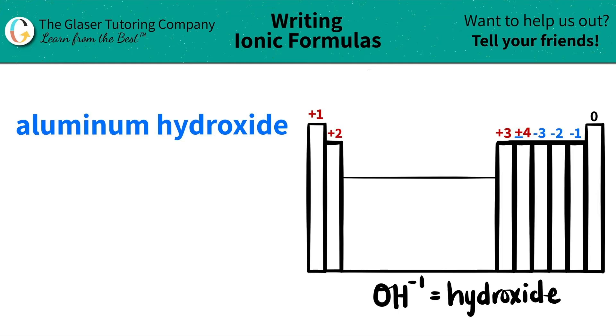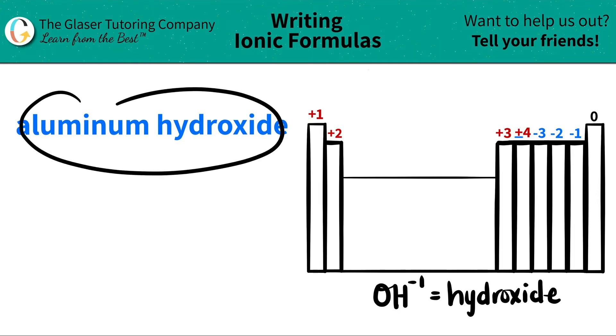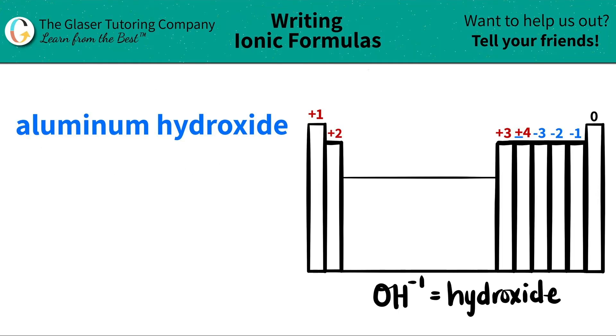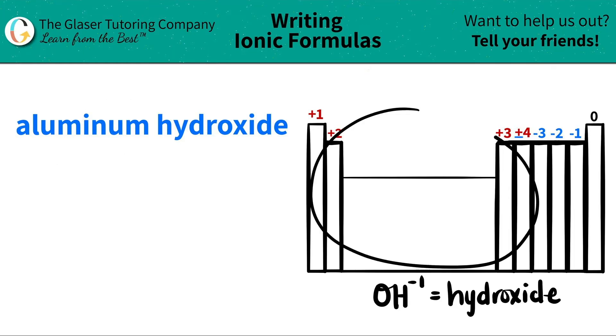Today, we are going to be writing the formula for the ionic compound aluminum hydroxide. So let's work from left to right. I see that I have aluminum. I'm going to scan the periodic table to see where aluminum is.